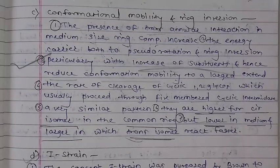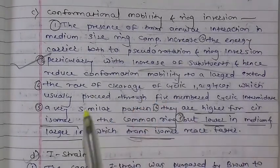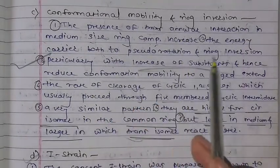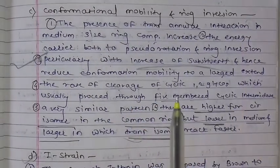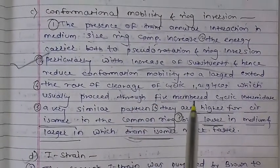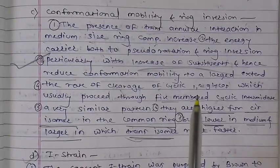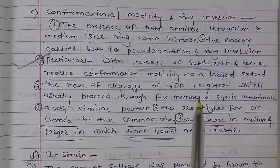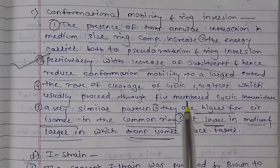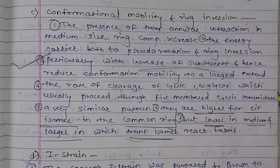The questions we will cover are: What are the properties of the medium size ring? What is the conformation, mobility, and ring inversion? What is I-strain? What is proximity strain? What is transannular strain? These are the short note questions we will address.